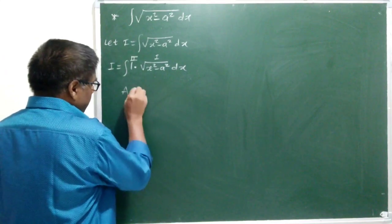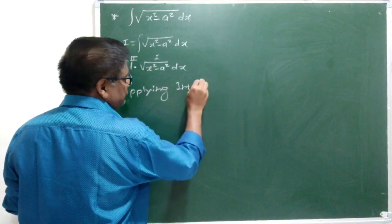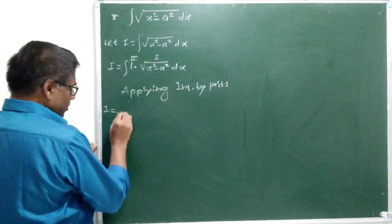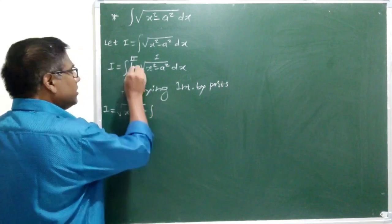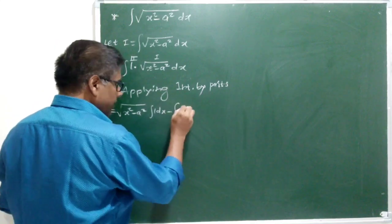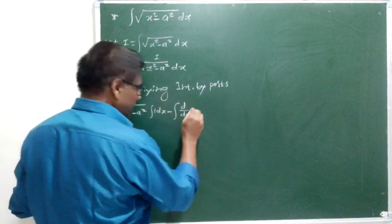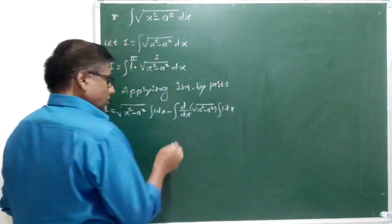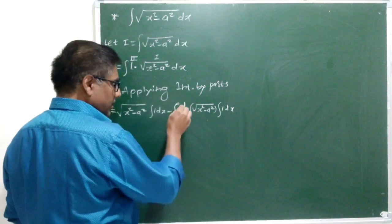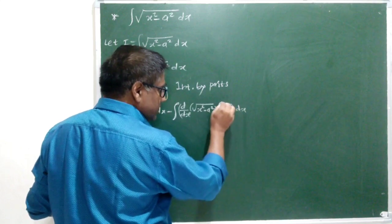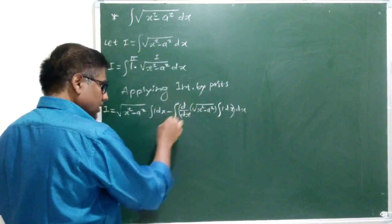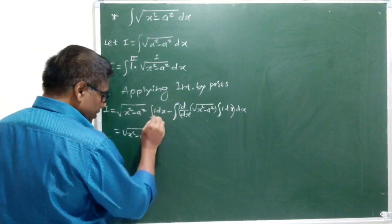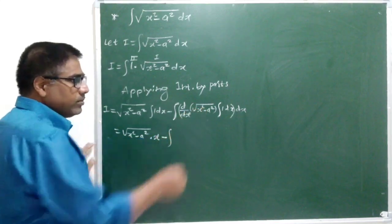Now, applying integration by parts: I is equal to first function, root of x square minus a square, multiplied by the integral of the second function, minus the integral of the derivative of the first function times the integral of the second. The first function is root of x square minus a square and the integral of the second is x. Let us put a bracket and put one more dx for the outer integral. This dx is for the inner integral and this dx is for the outer integral.